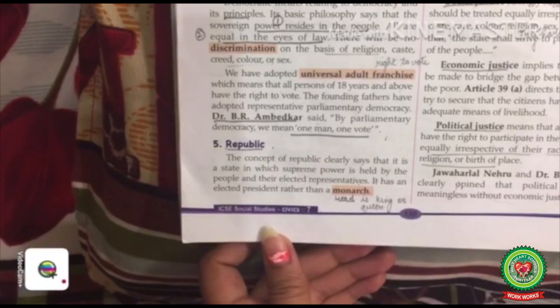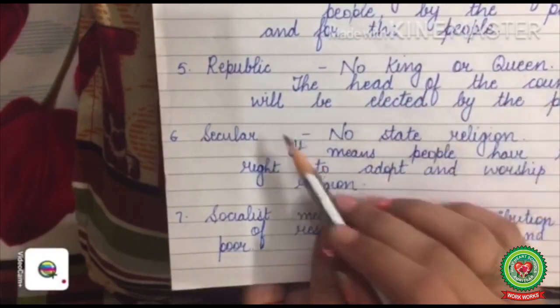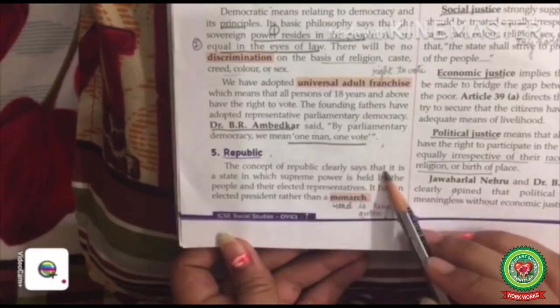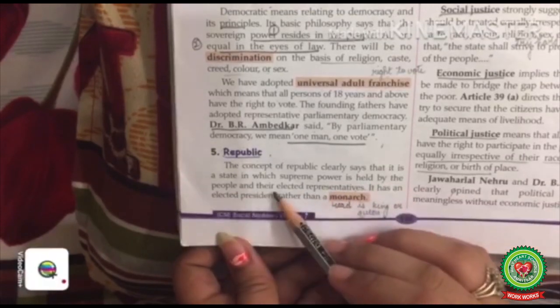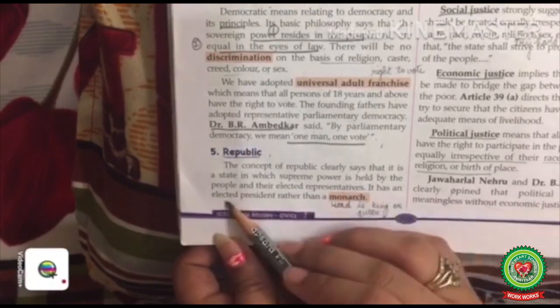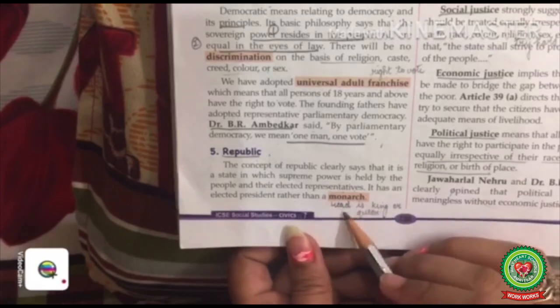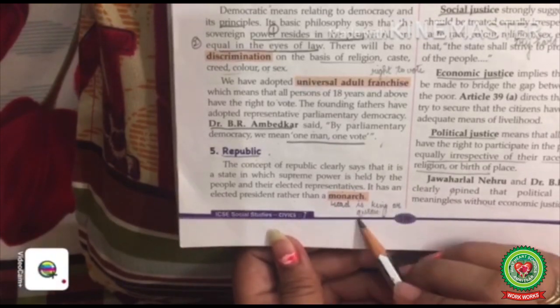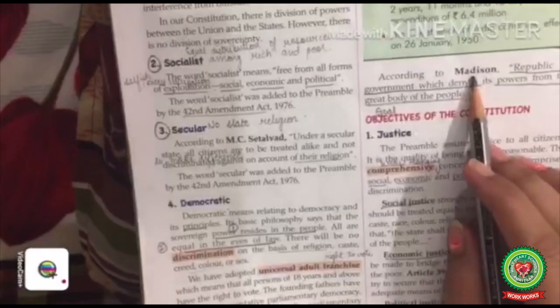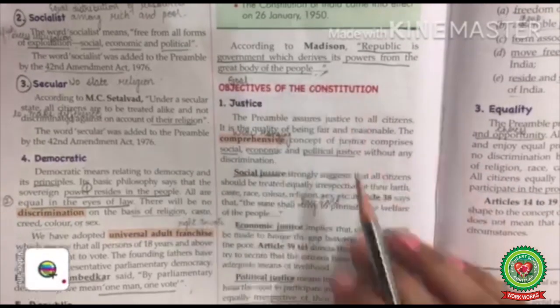Next comes Republic. By the word Republic we mean no king or queen — the head of the country will be elected by the people. The concept of Republic clearly says that it is a state in which supreme power — the highest power — is held by the people and their elected representatives. It has an elected president rather than a monarch. The word monarch means a state where the head is a king or queen, but in our country there is no king or queen. According to Madison, a republic is a government which derives its power from the great body of the people.